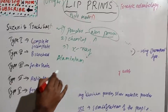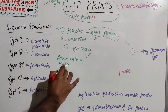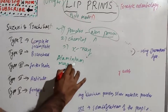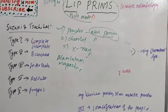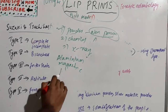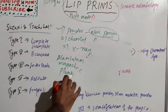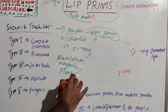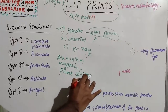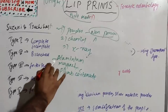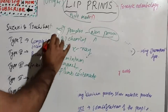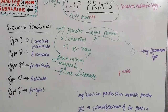The most commonly used powders are aluminium powder, magnetic powder, and plumb carbonate powder — a white powder. These powders are used for recording lip prints on non-porous surfaces.